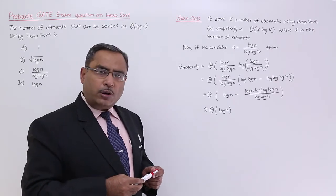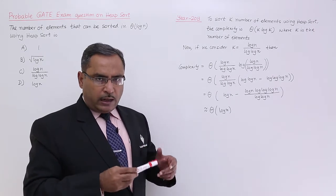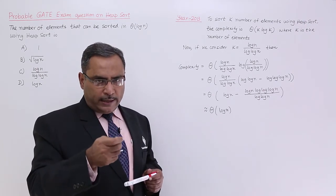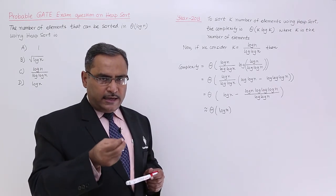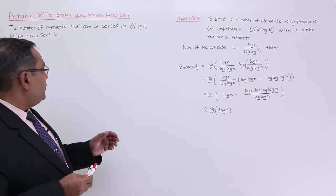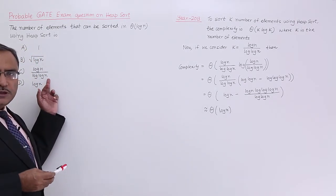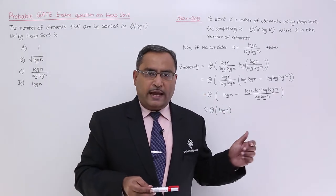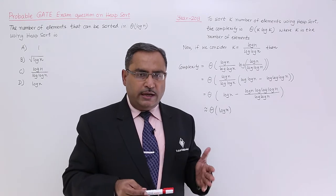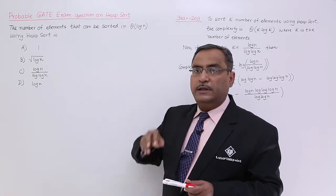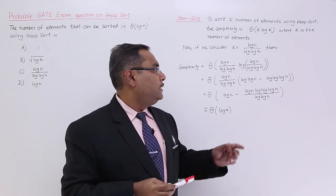So, k is the number of elements and the sorting complexity will be big theta of k log of k. So, you are taking this one as the key to solve this particular problem. Now, if I take this C, the option C, if we take this option C there as the value for k, let us check whether it is really giving me the complexity of the sorting is big theta of log of n or not.